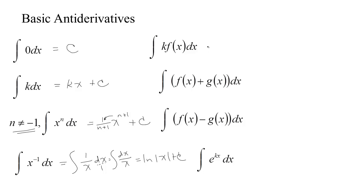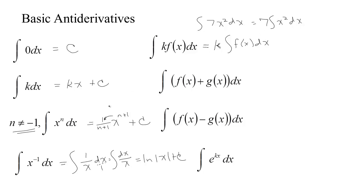Most of these are just our derivative rules backwards. Notice that if there's a constant in the function, you can just focus on finding the antiderivative of the function part — this is a consequence of the constant multiple rule. If you take the derivative of a constant times a function, it's a constant times the derivative of the function, so you can bring that constant out of the integral. For example, if I'm trying to find the antiderivative of 7x squared dx, I can pull that 7 out and focus on finding the antiderivative of x squared dx, which matches the power rule case.